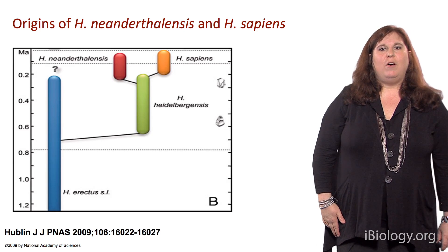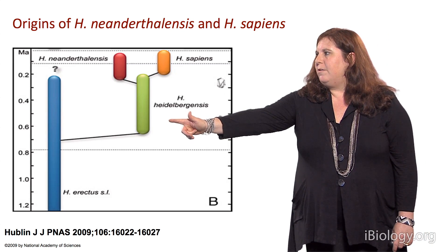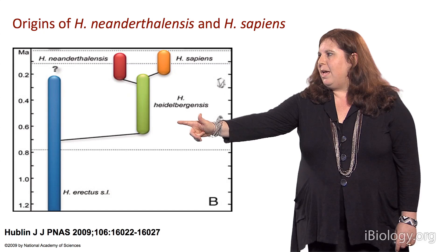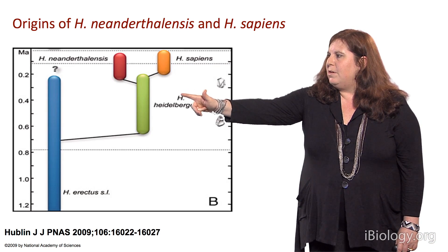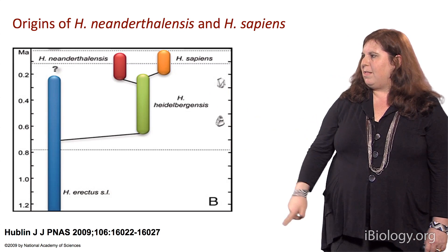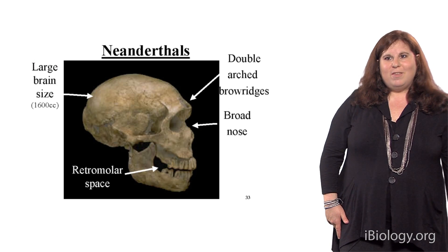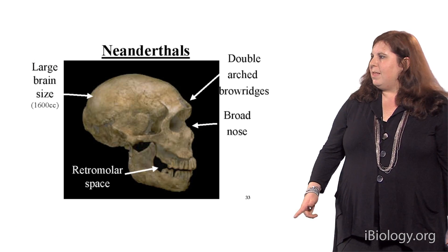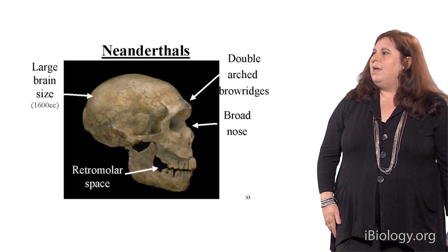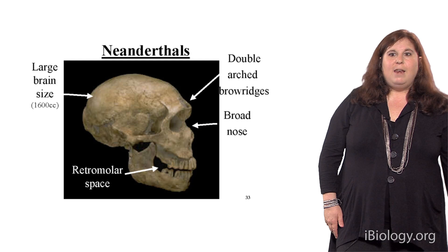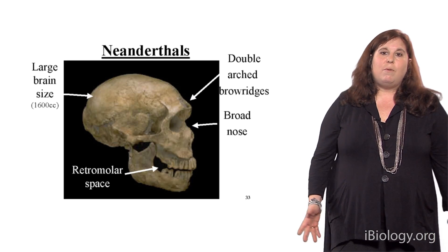Now let's move to the origins of Homo neanderthalensis and Homo sapiens. There's some question about the species preceding Neanderthal and Homo sapiens. What is clear is that the Neanderthal species arose somewhere within the past 300,000 to 400,000 years, and Homo sapiens arose within the past 200,000 years. Here's a fossil from Neanderthal. We can see features such as the double-arched and very wide brow ridges, a broad nose, a very large brain size, and a retromolar space. These species were very robust — males would have been over 6 feet tall with very big bones and rather big brains.